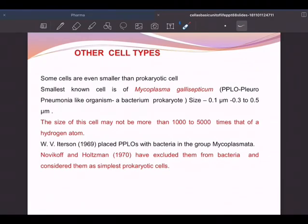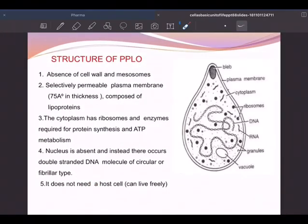Mycoplasma, PPLO. In examinations, it's important to expand the abbreviation: Pleuro Pneumonia Like Organism. The size of the cell may not be more than 1000 to 5000 times that of this. It has been placed, PPLOs with bacteria, in the group Mycoplasmata. This is how the smallest organism, PPLO, will be there.